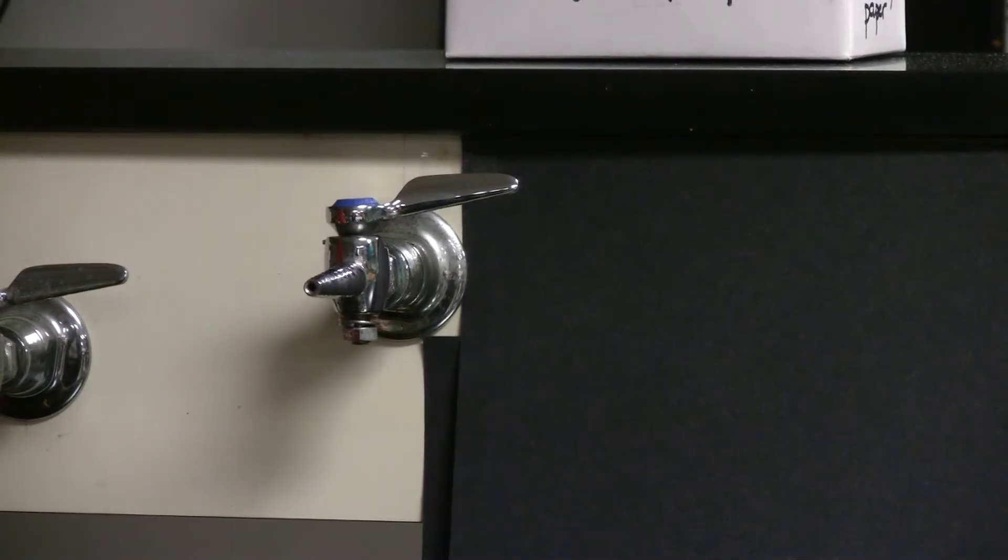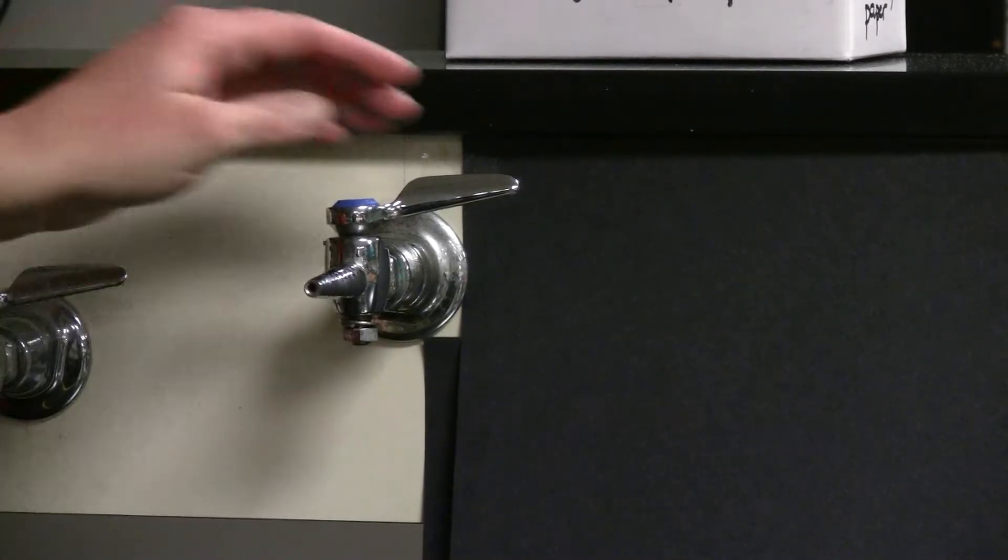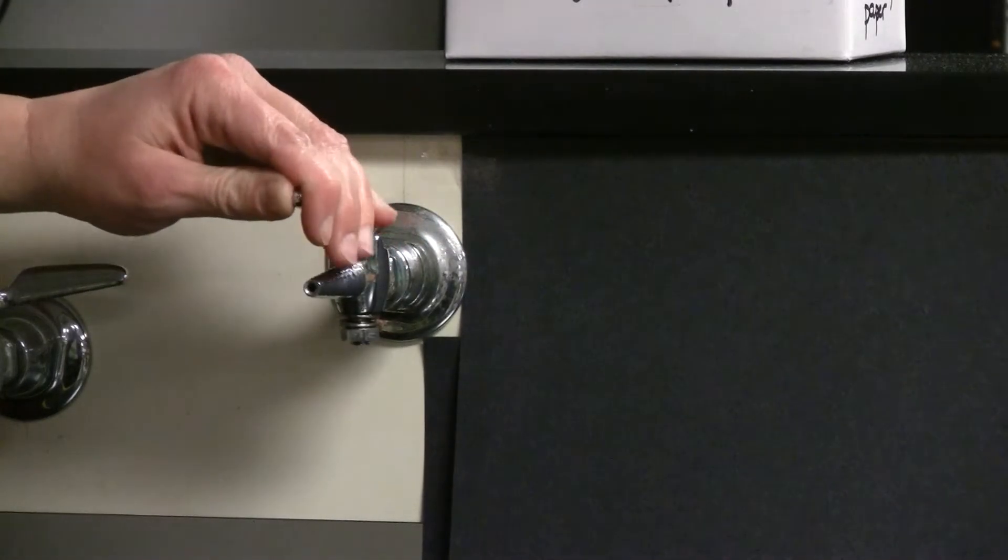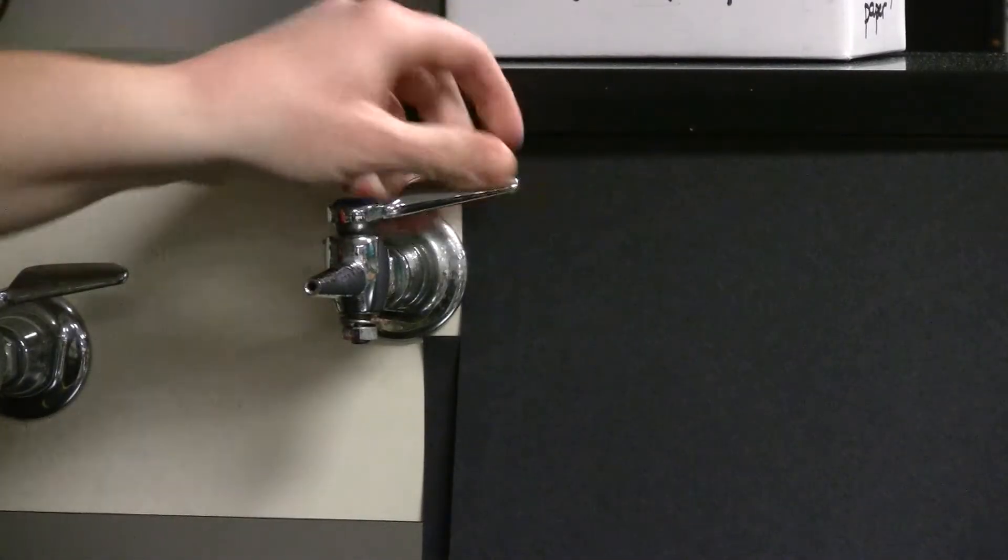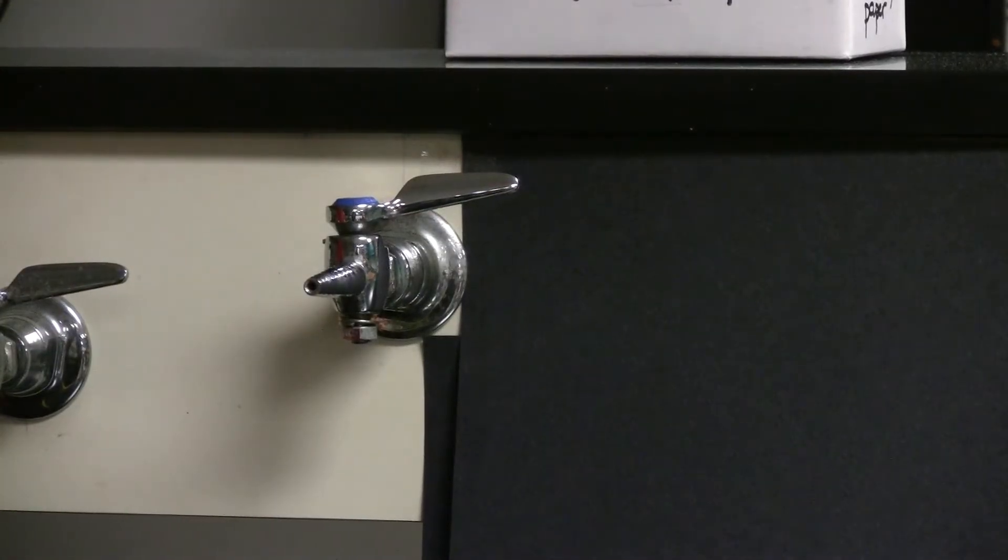To open the gas valve, you would turn the handle so that the handle is parallel to the nozzle. Always make sure that it's open all the way, that it is completely parallel or in line with the nozzle. It should not be open part of the way. To turn off the gas, return the handle back to perpendicular in either direction.